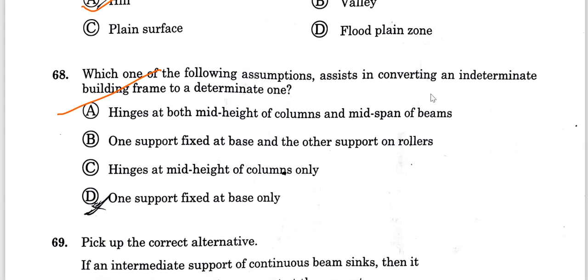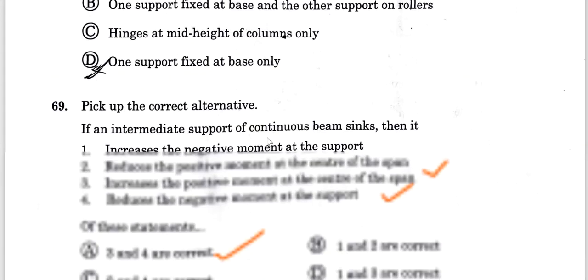Question 68: Which of the following assumptions assists in converting an indeterminate building frame to a determinate one? The answer is basically hinges at mid-height of columns and mid-span of beams. Option A is the correct answer.